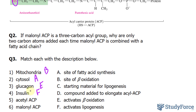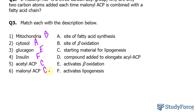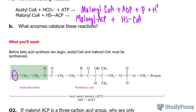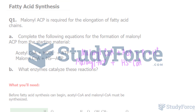Acetyl ACP is the starting material for lipogenesis, and so is Malonyl ACP — we discussed this already, so both are C. Malonyl ACP is also the compound added to elongate acyl ACP, so that is D. And there you have it — three questions based on fatty acid synthesis.